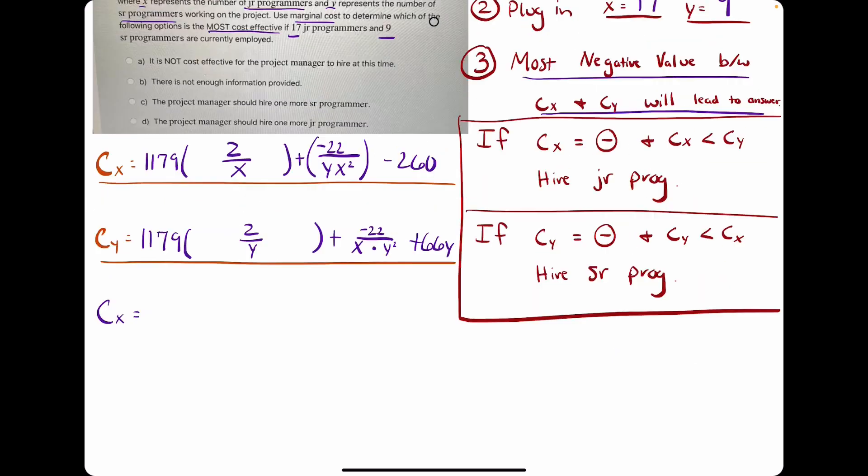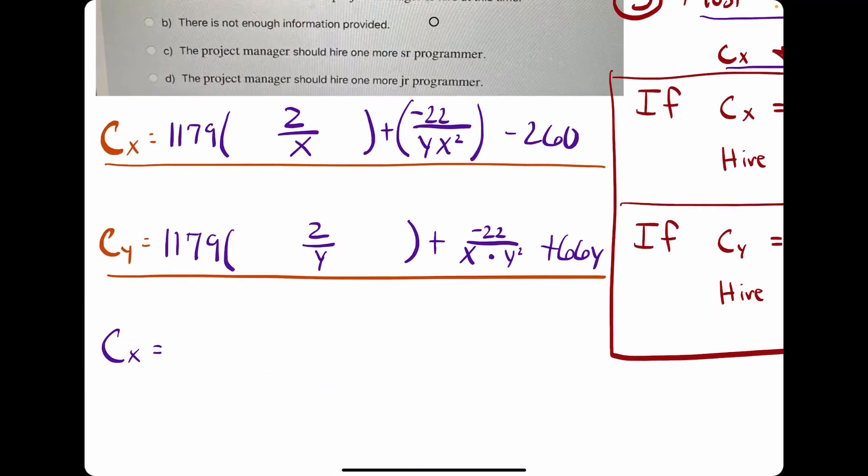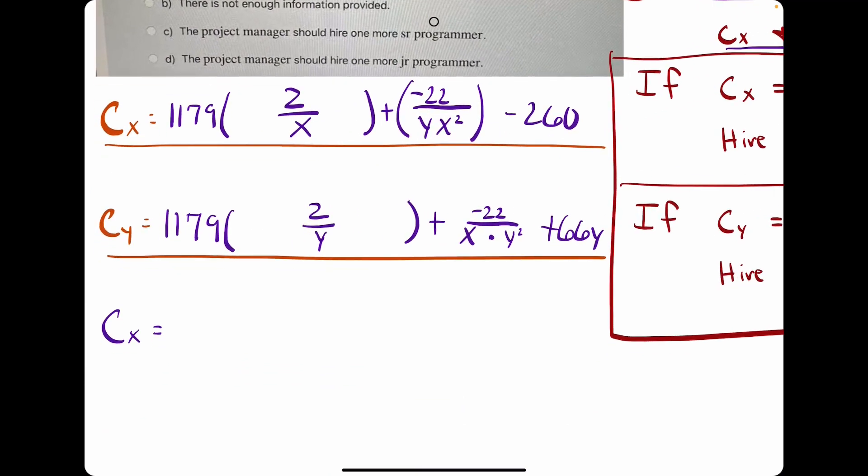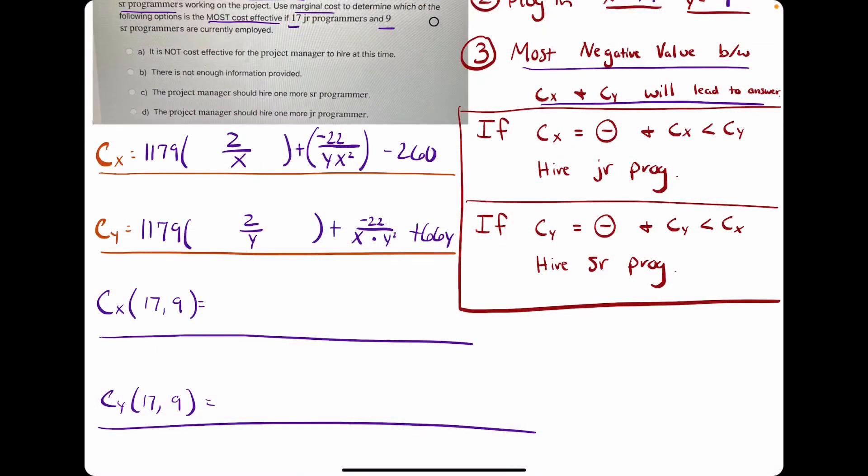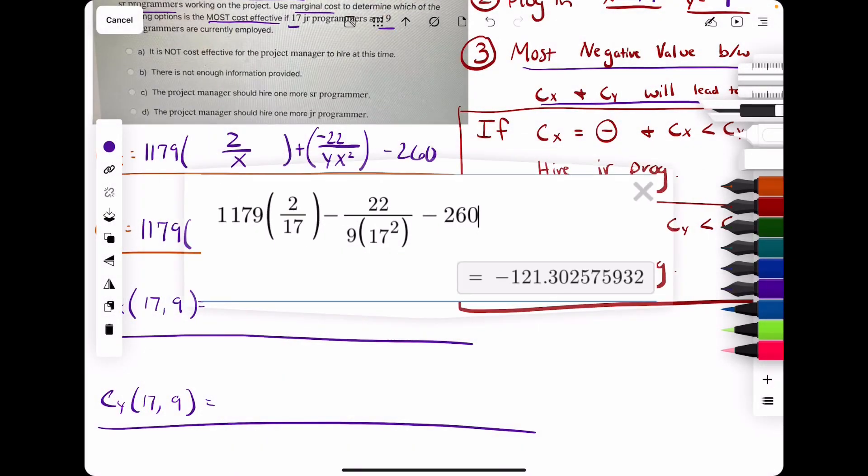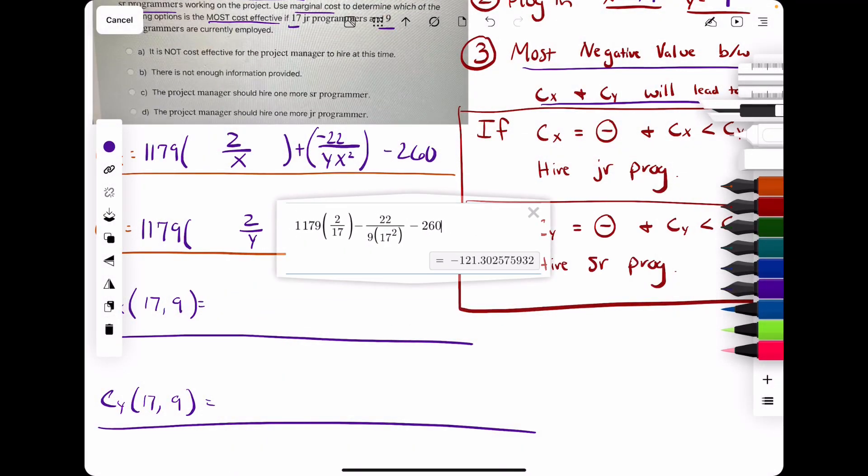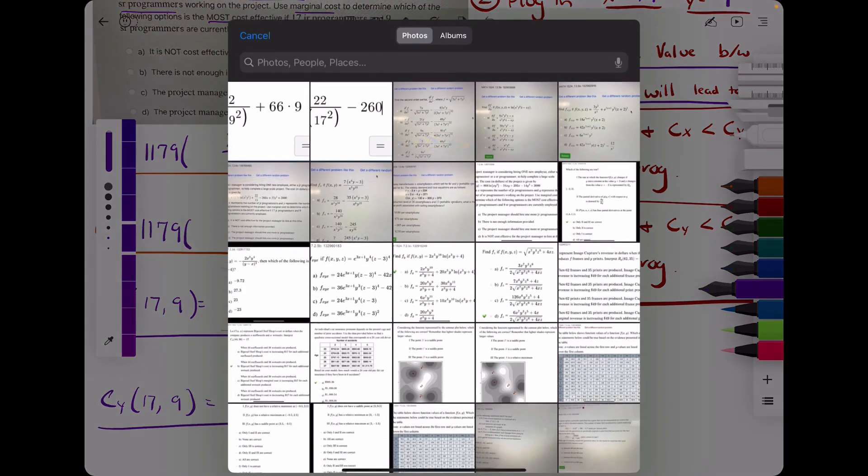Okay, so now we're plugging in 17 and 9 for x and y, respectively. So let's see if we can do this. I may just try to jump straight to Desmos here. Alright, so we've plugged in 17 and 9 into x and y, respectively, for Cx and for Cy.